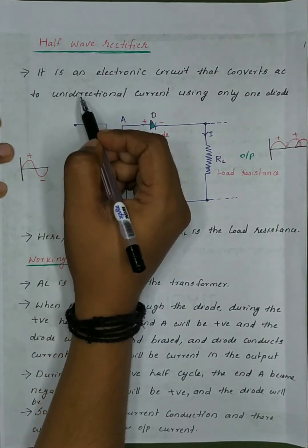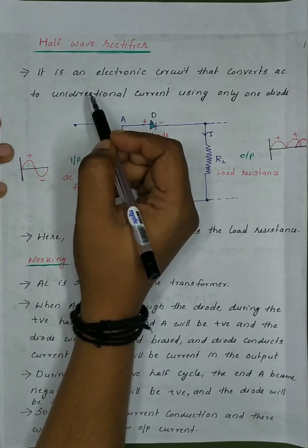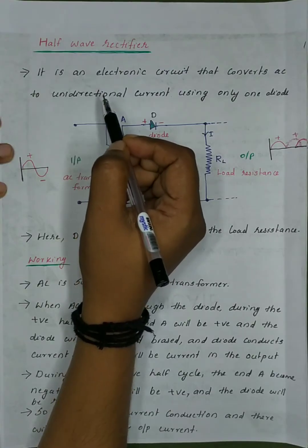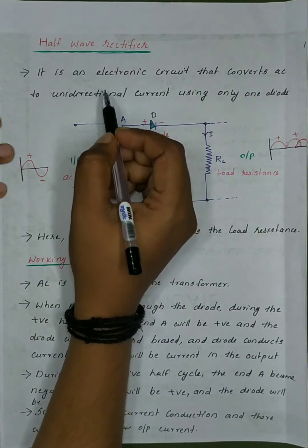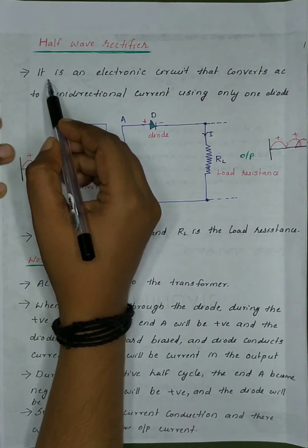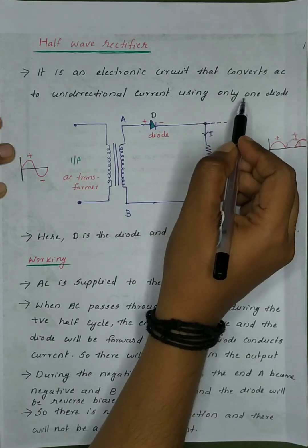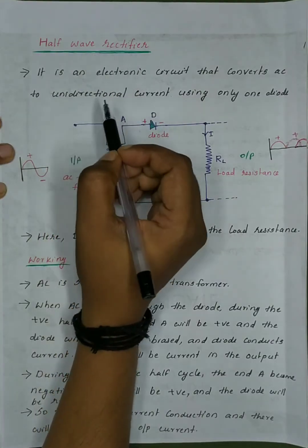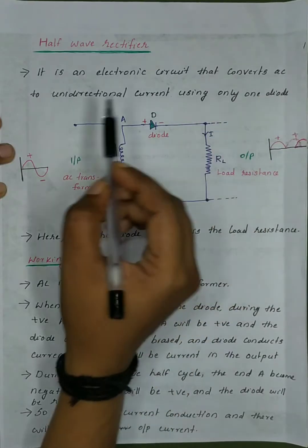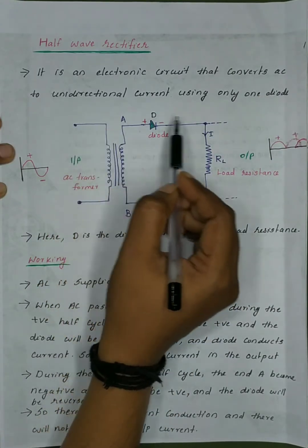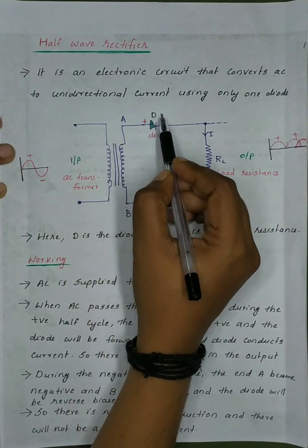What is a half-wave rectifier? It is an electronic circuit that converts AC to unidirectional current using only one diode. We use a circuit for unidirectional current using a half-wave rectifier. We use a diode in the half-wave rectifier.